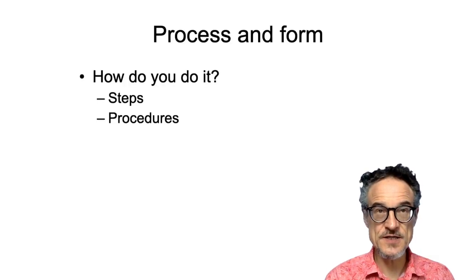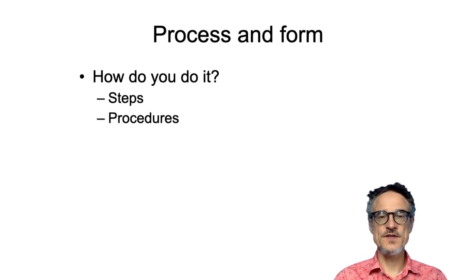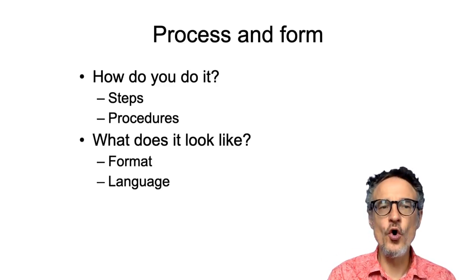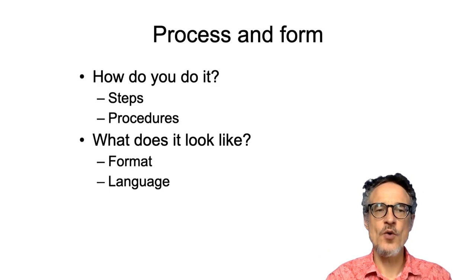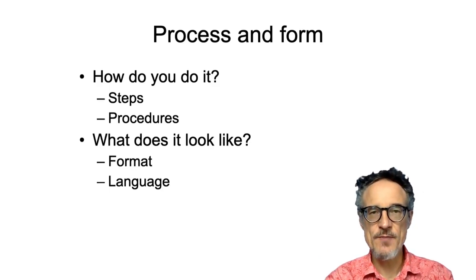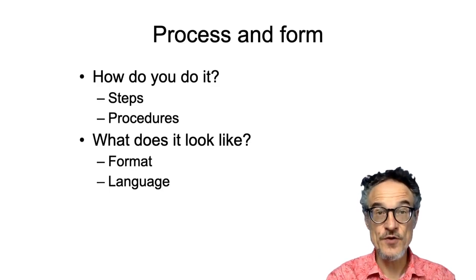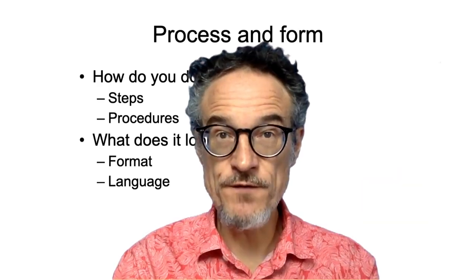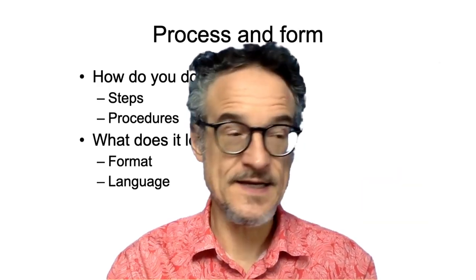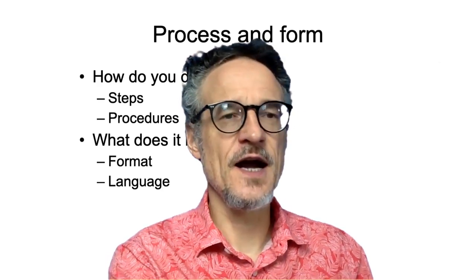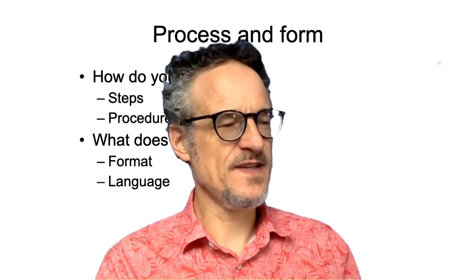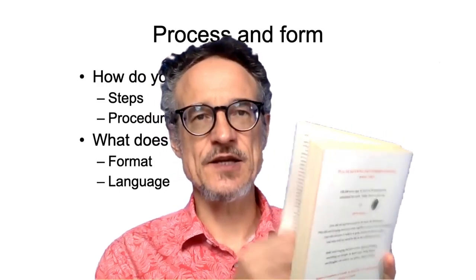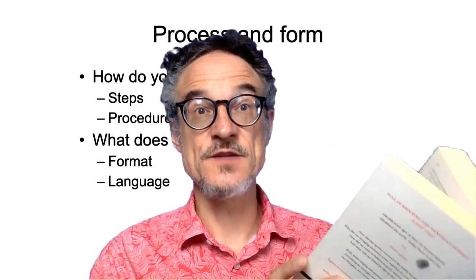Process is how you do something — the steps that you take — whereas form is about what it looks like: the format, the grammar, the language, the words. Often when we think about writing, we think about writing as a thing, as an object, writing as form.